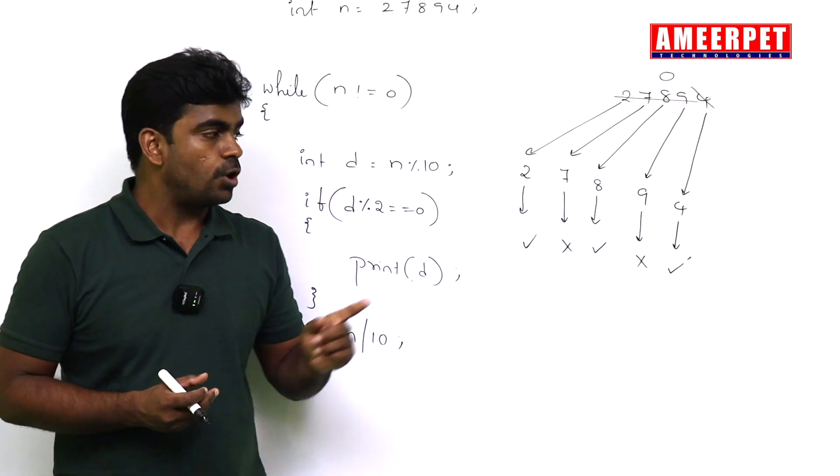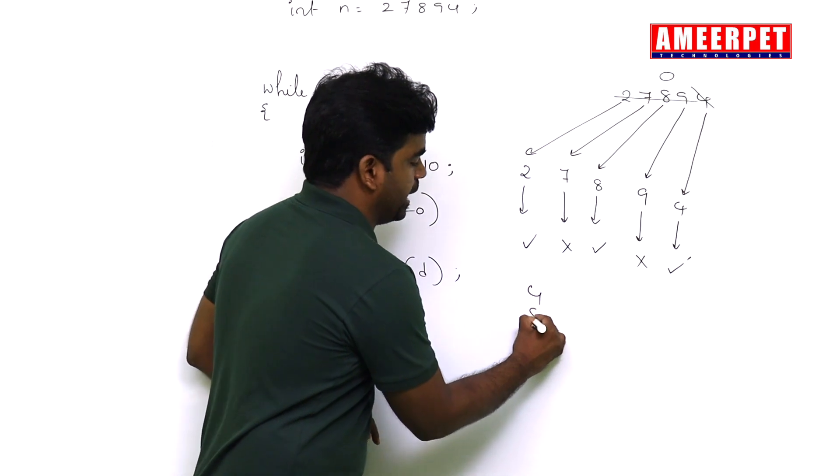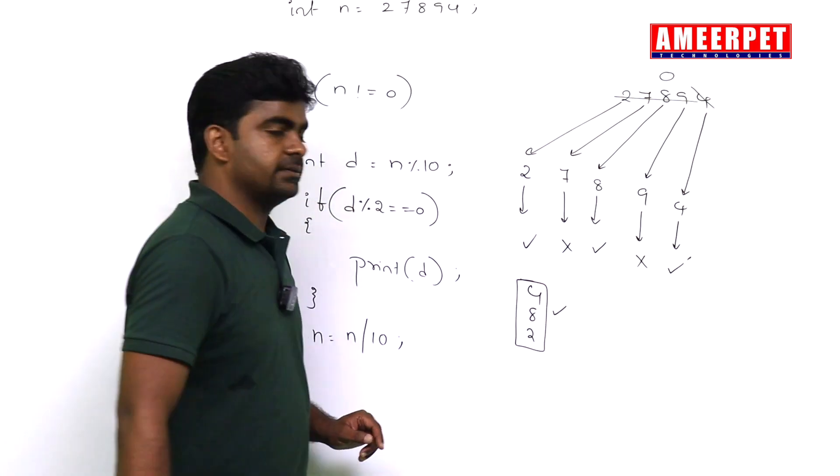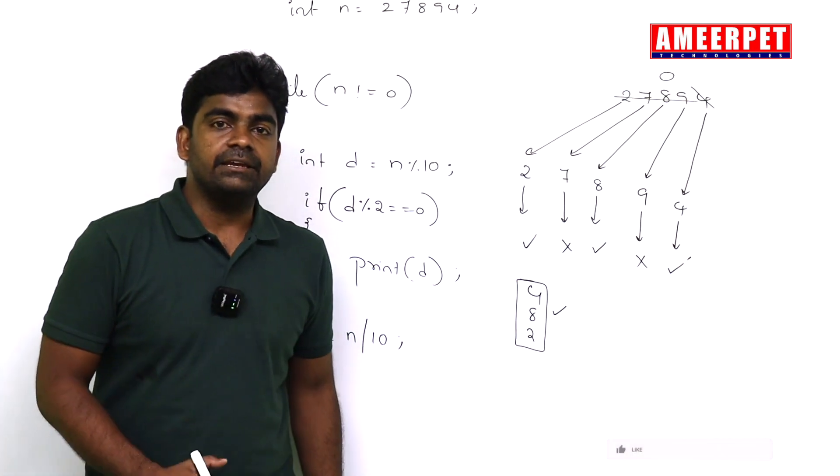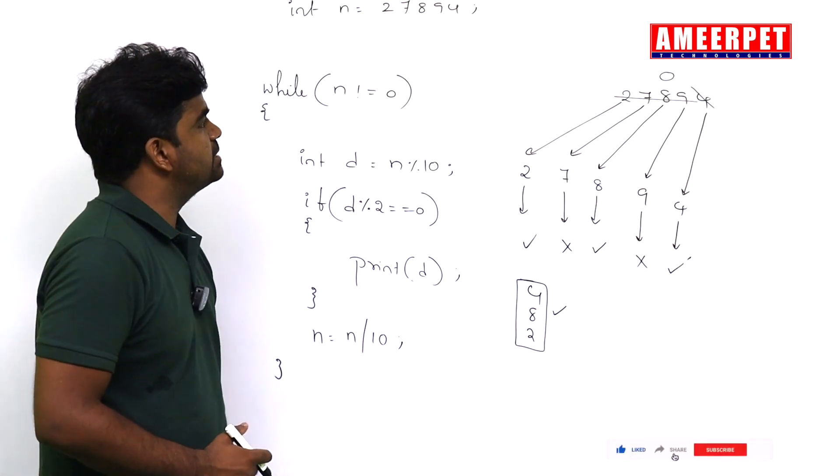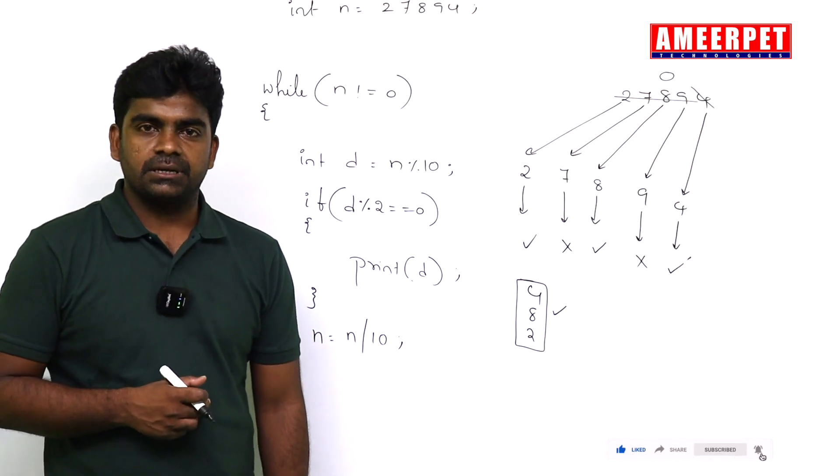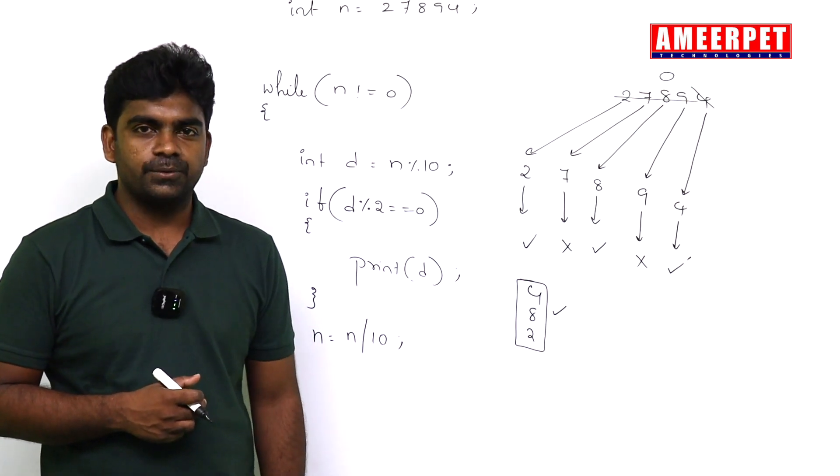Finally, the value becomes 0. 0 not equals to 0 condition is false. So the output is 4, 8, 2 only. Only even digits are printing. This is how to display only even digits in the given number. Hope you understood. Thank you.